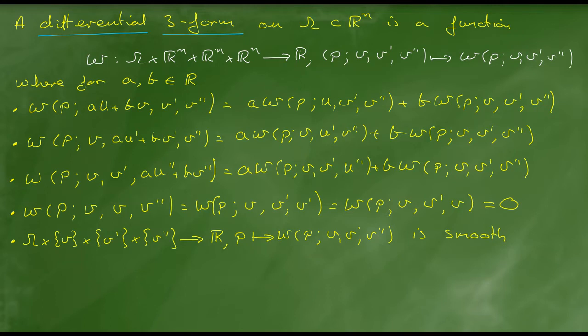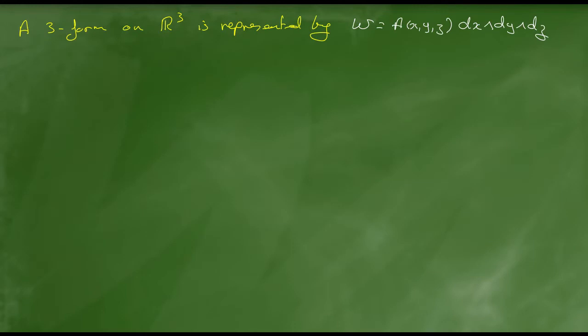I'll look at the case n equal to three first of all, and introduce some terminology and notation. A three-form on three-dimensional space will be written using the notation A of x, y, z times dx wedge dy wedge dz. Here A is a smooth function, and I'll say something about the symbols or the notation dx wedge dy wedge dz now.